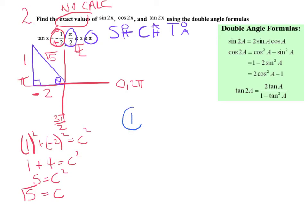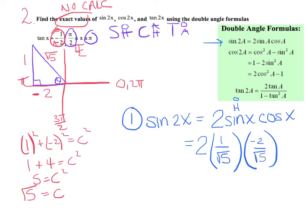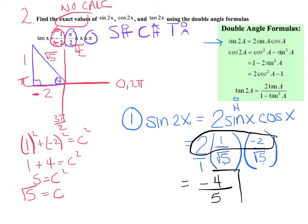Let's run through the questions. First, sine of 2x — catch that it's a double angle, multiplying angle x by 2. The only option for sine of 2x is 2 sin x cos x. From my picture, sine is opposite over hypotenuse: 1 over radical 5. Cosine is adjacent over hypotenuse: negative 2 over radical 5. So sine of 2x equals 2 over 1 times (1 over radical 5) times (negative 2 over radical 5). The tops give negative 4, and radical 5 times radical 5 is the square root of 25 which equals 5. So sine of 2x equals negative 4 fifths.